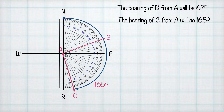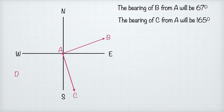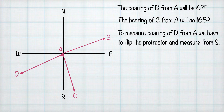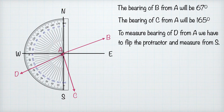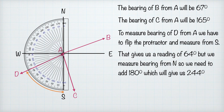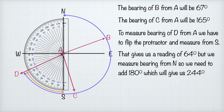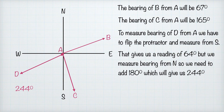Now let's see what happens when we work with directions on the left-hand side of the north-south line. For point D, we have to flip the protractor so that north is at the bottom, facing south. We then read from south up to the line for D, which gives us 64 degrees. But because bearing is always measured clockwise from north, we must add 180 degrees for anything on the left-hand side of the north-south line.